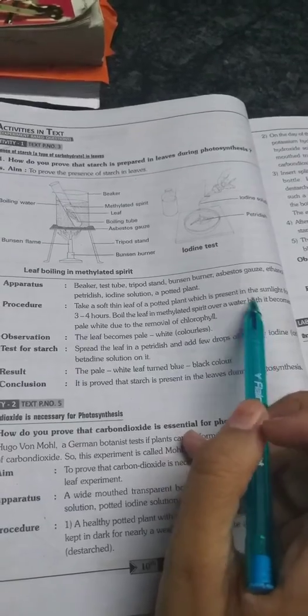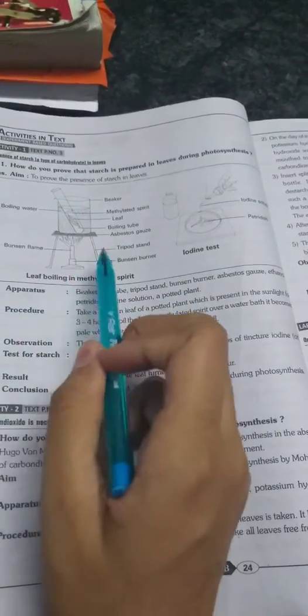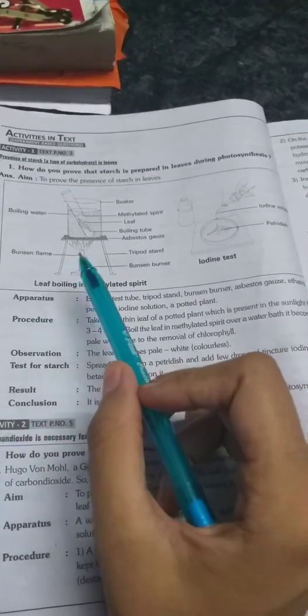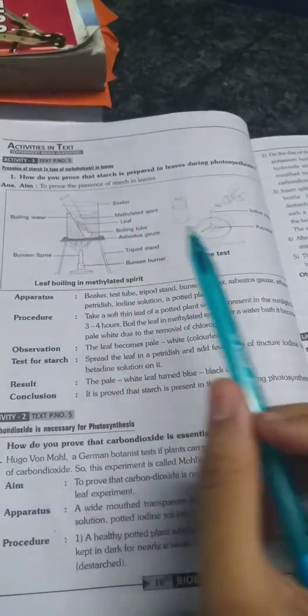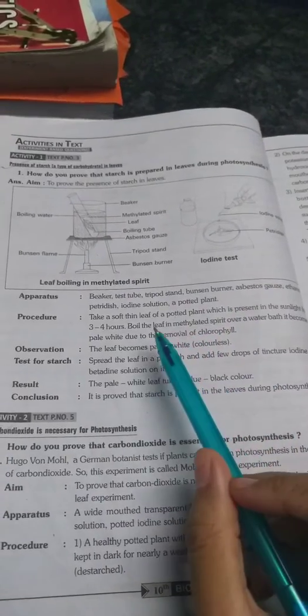Over water bath means in this beaker we are keeping a test tube and we are boiling it. Which chemical are we using? In that beaker we are using methylated spirit, that is a chemical.